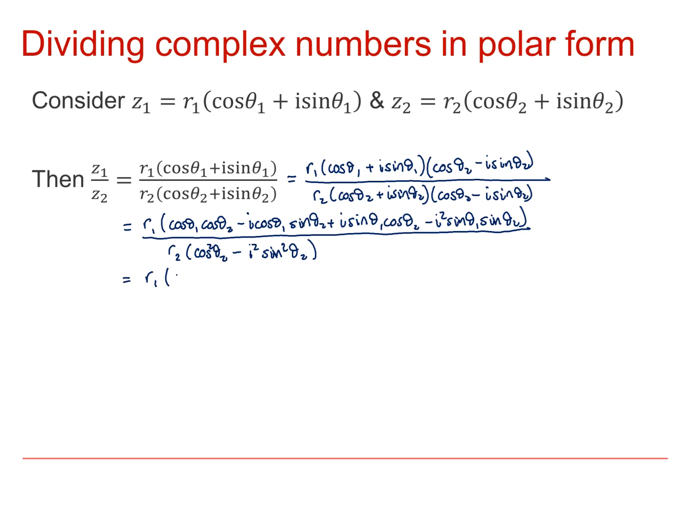So, in the numerator, collecting real and imaginary parts, we've got cos theta1 cos theta2. And then I've got an i squared which is minus 1, so plus sin theta1 sin theta2.